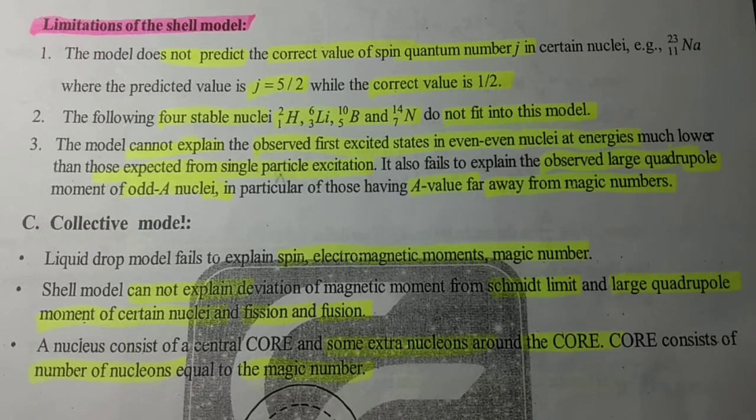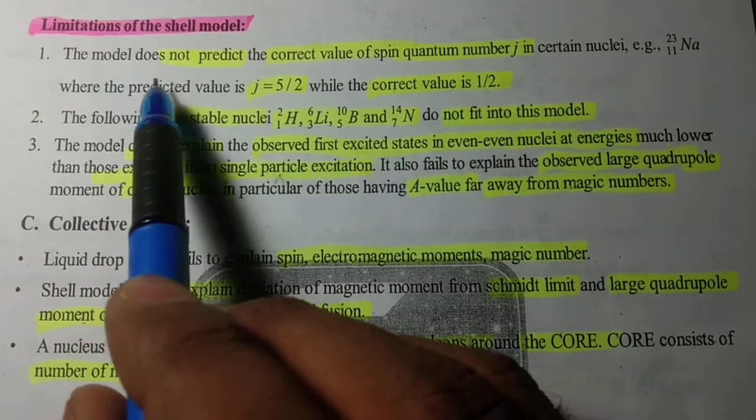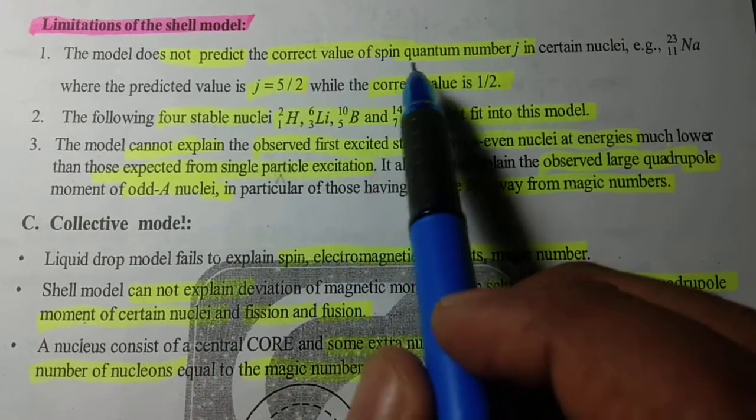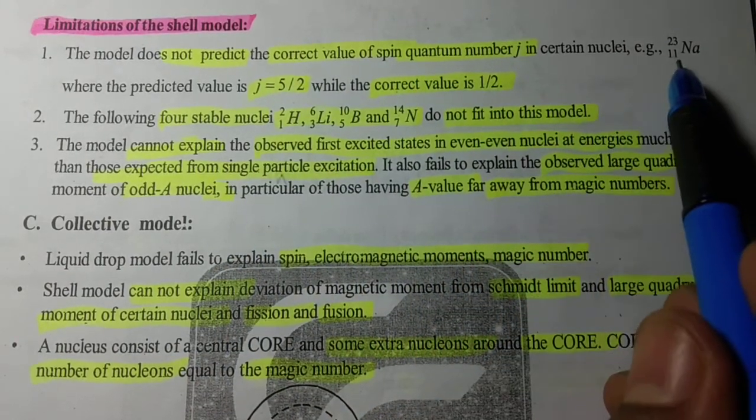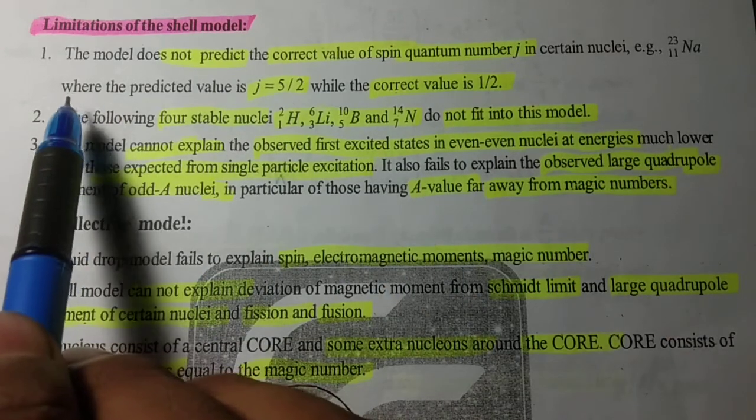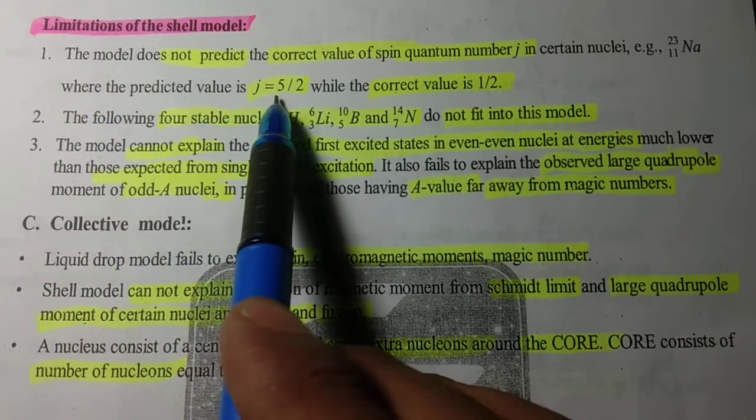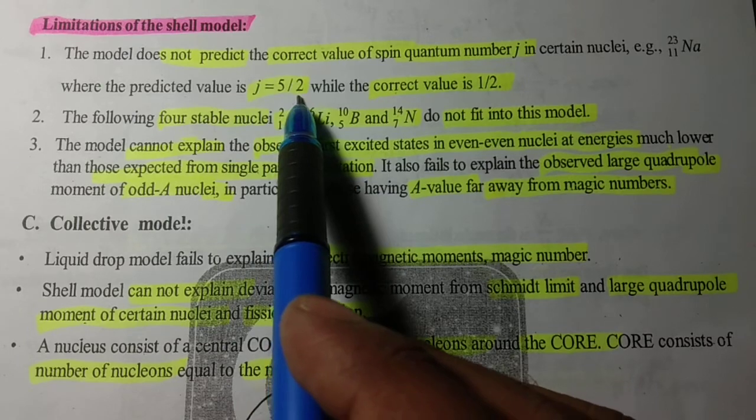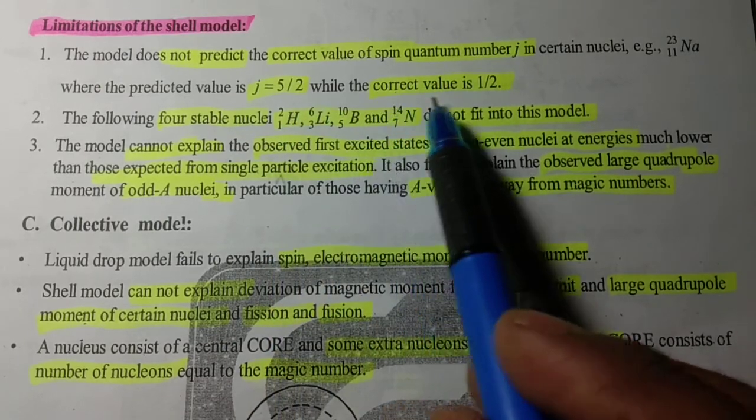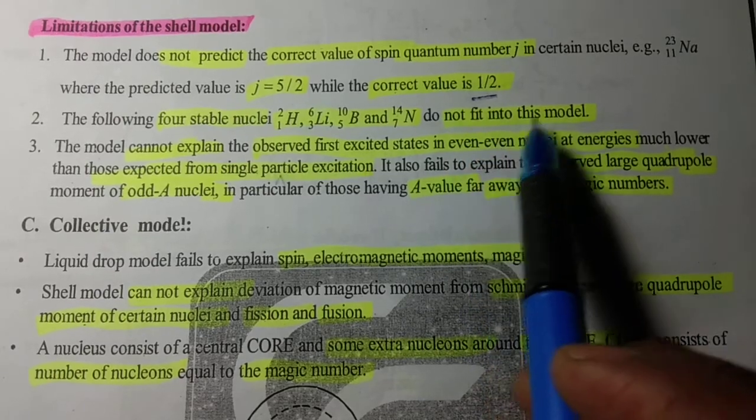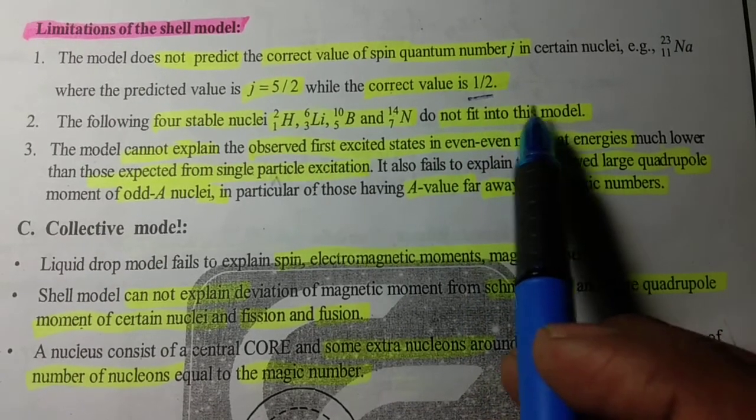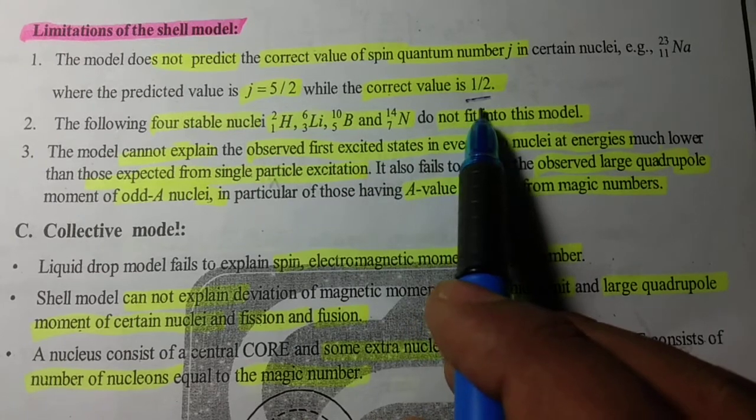This model does not predict the correct value of spin quantum number j for certain nuclei, for example sodium, where the predicted value is j = 5/2 while the correct value is 1/2. In the shell model case the value is 5/2, but the correct value is 1/2.